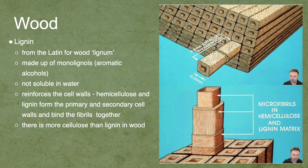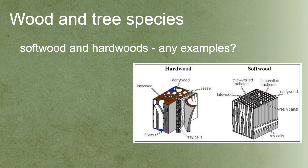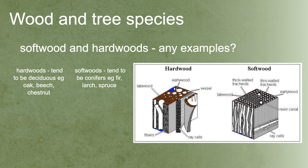There's normally more cellulose than lignin in wood. Lignin is hard and rigid, and cellulose is also somewhat stretchy. When we think about hardwoods and softwoods, we're thinking about the structure of the wood. A softwood has lots of long fibrils, whereas a hardwood has lots of shorter fibrils, which make it a stronger structure. Hardwoods tend to be deciduous — things like oak, beech, and chestnut. Softwoods tend to be conifers — fir, spruce, things like that.